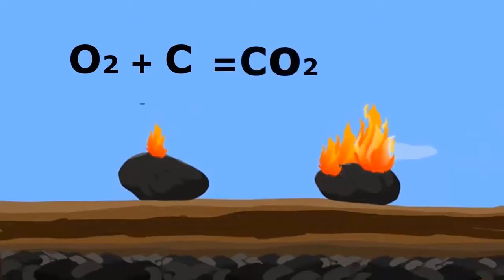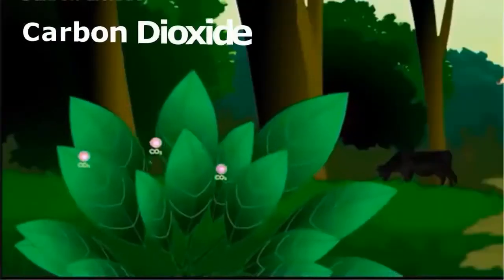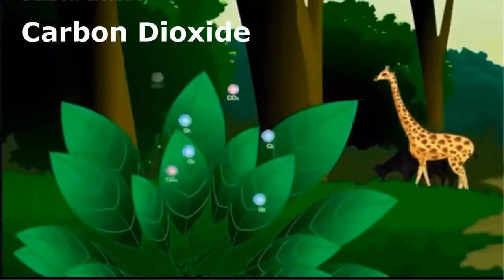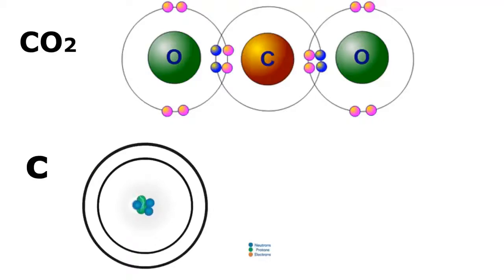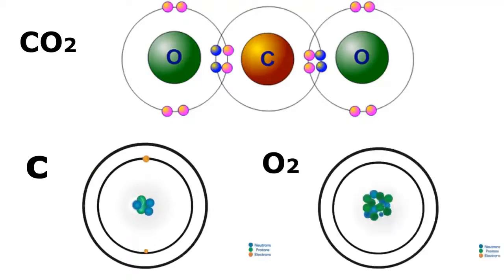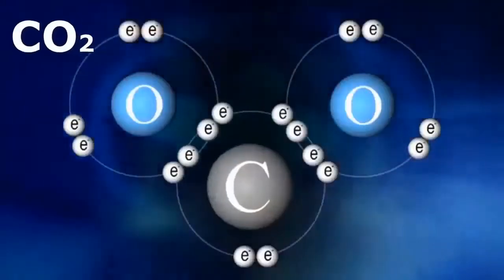O2 plus C equals CO2. Carbon dioxide is a colorless gas whose chemical composition and chemical properties are quite different from the structure and chemical properties of carbon C and oxygen O2.